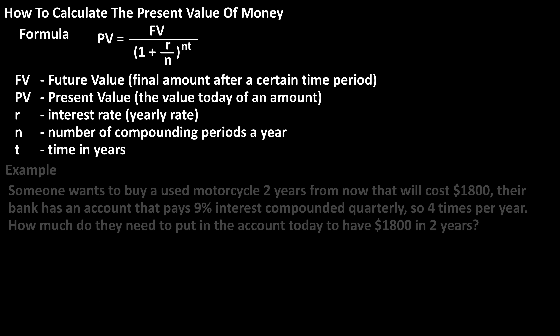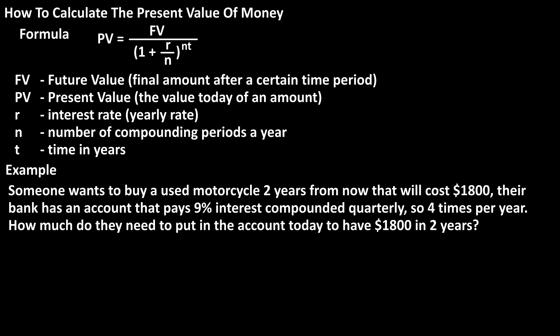As an example, let's say that someone wants to buy a used motorcycle in two years, and it will cost $1,800. Their bank has an account that pays 9% interest compounded quarterly — so four times per year. How much do they need to put in the account today to have $1,800 in two years?